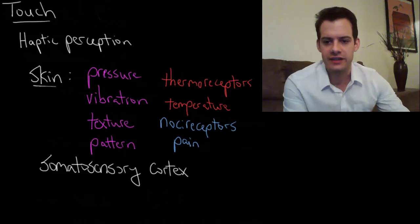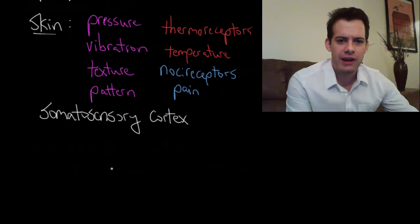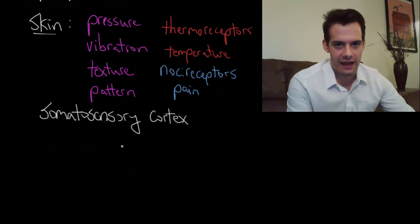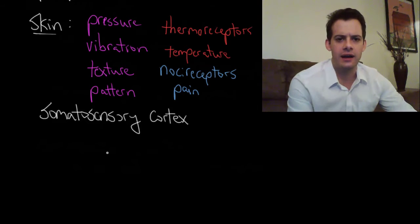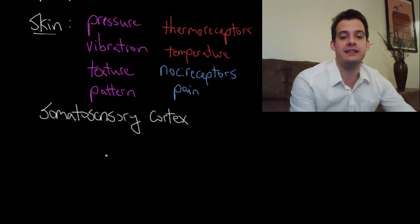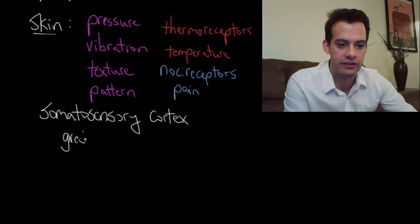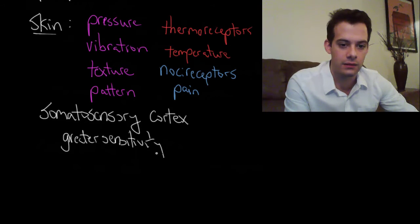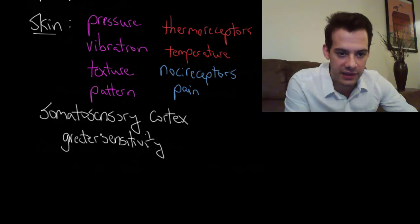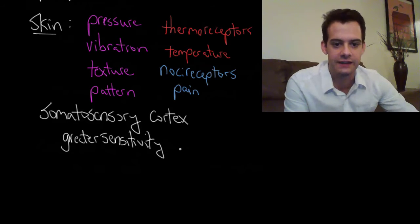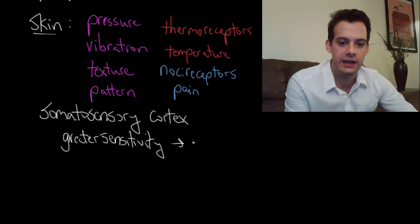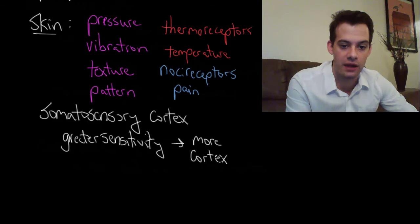And the other thing to know about it is that the greater amount of sensitivity that we have, that means we have more receptors there. That means we're going to need more cortex in the brain to process that information. So the idea here is that greater sensitivity means that we're going to need more cortex. And this is pretty logical.